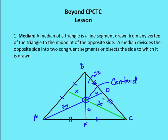That centroid has meaning in terms of the length of the median itself. The length from vertex A to the centroid is two times the length from the centroid to the opposite side. So there's a 2:1 ratio from the vertex to the centroid, and then from the centroid to the other side as part of the median.